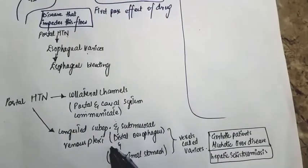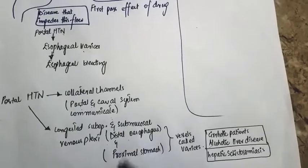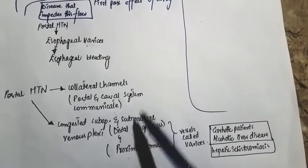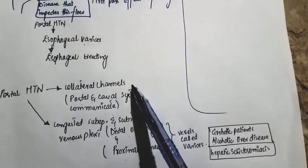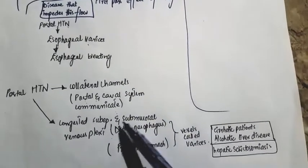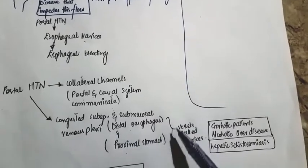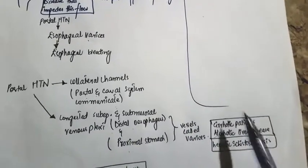These dilated vessels, whether due to collateral channels or congested sub-epithelial and submucosal venous plexuses, are varices. These are most common in cirrhotic patients with alcoholic liver disease or hepatic schistosomiasis.